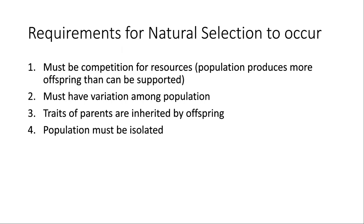Fourth, the population must be isolated. If it's isolated, nothing from outside mixes with that population, so natural selection can occur for a specific advantageous trait. If it's not isolated, other groups come in bringing a whole bunch of different traits, and you won't be able to select for traits as preferentially since a whole host of other things are taking place.